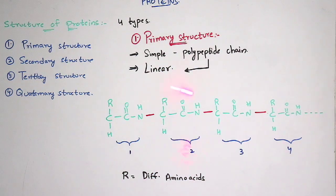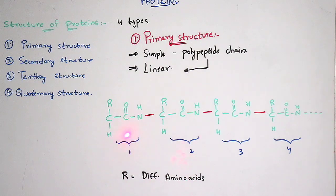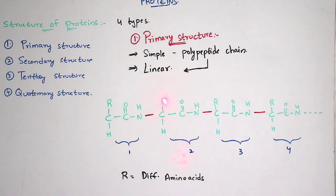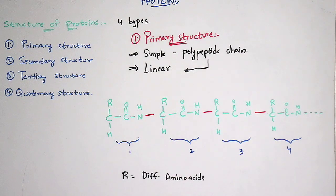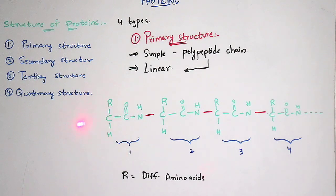This is the primary structure of protein. All the units shown are amino acids — first, second, third, fourth, and so on — each represented by an R group. The R group consists of amino acids which may be either different or the same. All of these amino acids bind with each other and form a polypeptide chain, and that polypeptide chain is the primary structure of the protein. The linkage between amino acids takes place by peptide bonds.